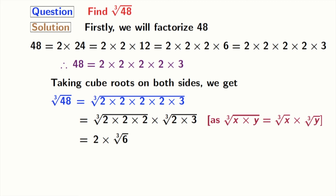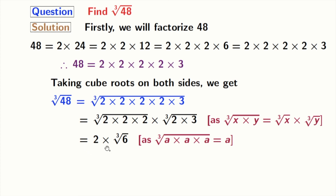In the first cube root, we have used the rule that cube root of a times a times a is equal to a. Here, a is 2. After simplification, we get 2 times cube root of 6 as our final answer.